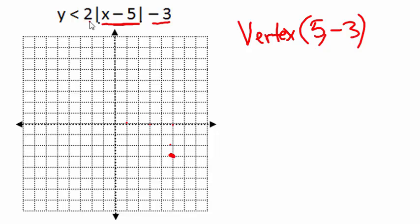Now, if it weren't for this 2 out front, we would just be... Well, this graph is opening up because we have a positive number in front of the absolute value quantity. And if it weren't for the 2, we'd just go up 1 over 1, up 1 over 1. Because there's a 2 there, we have a steeper slope. We want to go up 2 over 1, up 2 over 1, and so on. Same thing as we go off to the left because this V is going to be symmetric.